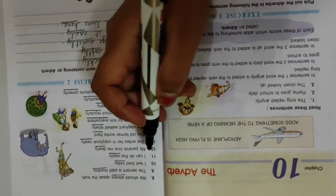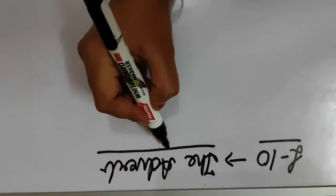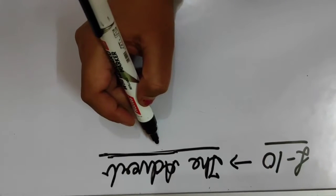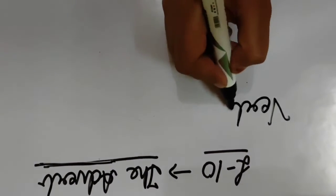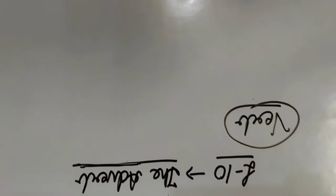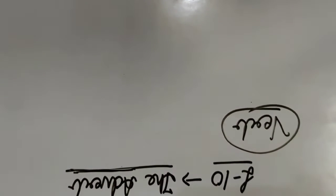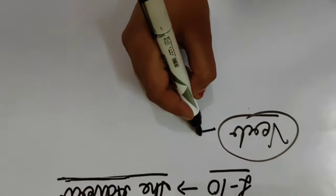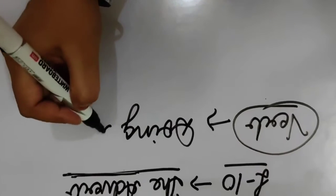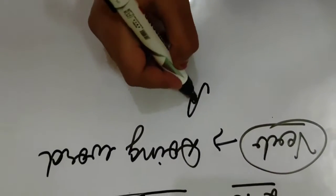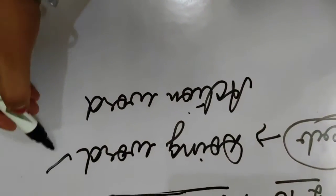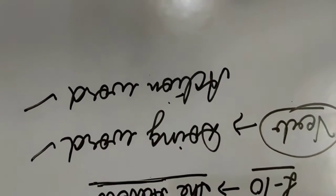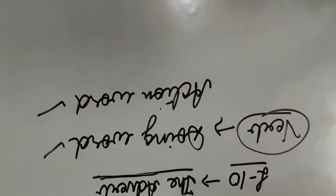Before we do the exercises, I want to explain what is an adverb. Children, you can see this word adverb. In the first term I taught you one lesson — that is verb. Can you tell me what is a verb? Verb is a doing word or action word. Whenever we are doing any action, that is called a verb.